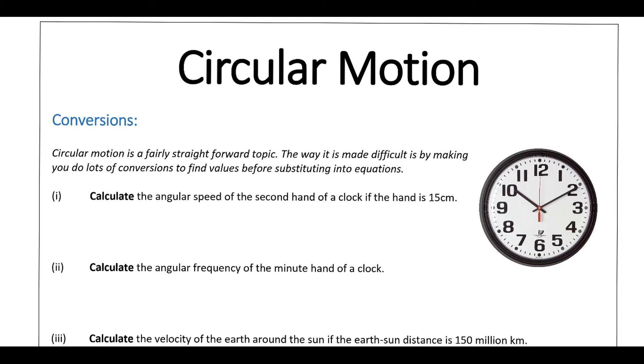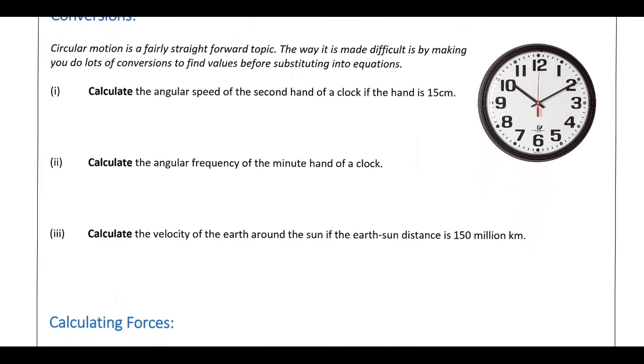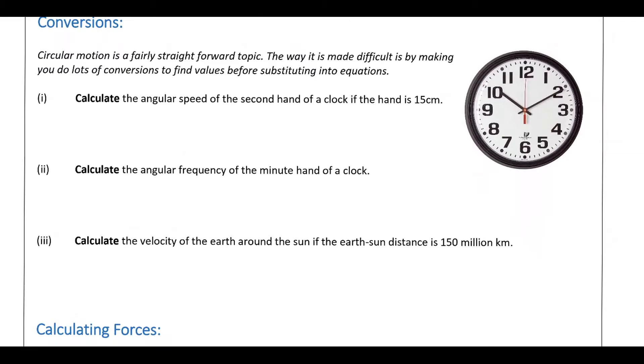So the first question wants us to calculate the angular speed of the second hand on the clock if the length of it is 15 cm. So the first thing for a second hand, it takes 60 seconds to complete one full circle, which means its time period is 60 seconds.